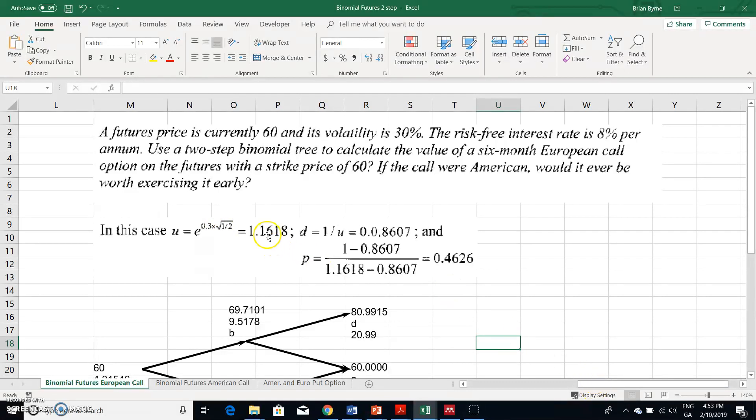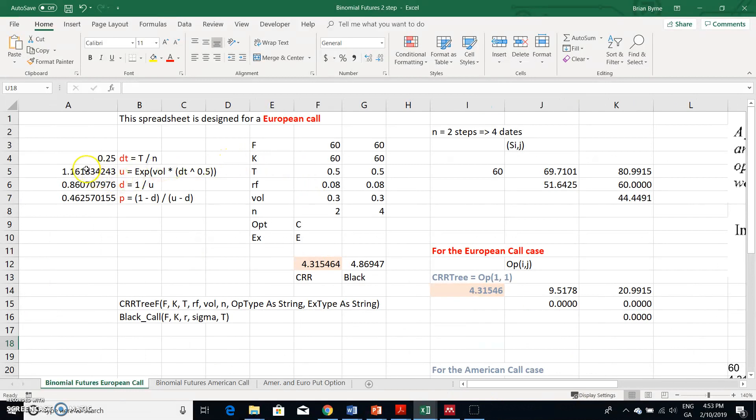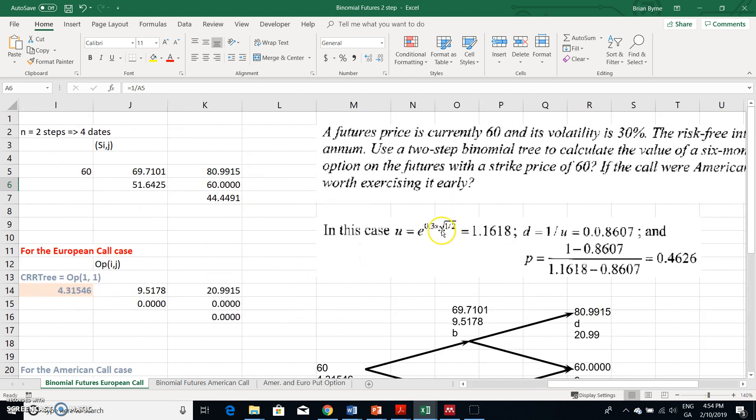The value we get is 1.16, but this square root should be the square root of 0.5 divided by 2. Let me come over here to illustrate how this figure 1.1618 should be obtained. u is the exponential e to the power of the volatility multiplied by dt. That's t divided by n, which is 0.5 divided by 2, giving 0.25. Taking the square root, anything to the power of 0.5 is like taking the square root, and the value we get is 1.16.